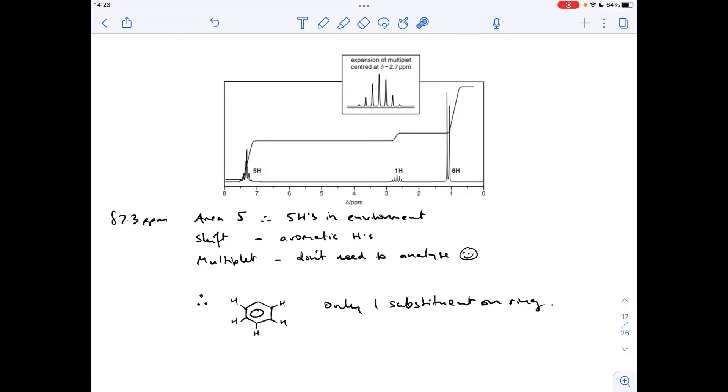And we've got a multiplet, whereas OHs are singlets. And that reminder there, you don't need to analyze aromatic splitting. So what have we got? We've obviously got a benzene ring with 5 hydrogens on, so there must only be 1 thing attached or substituted onto the benzene ring.